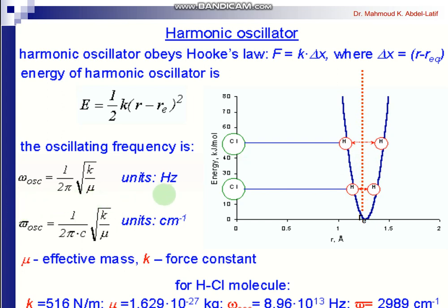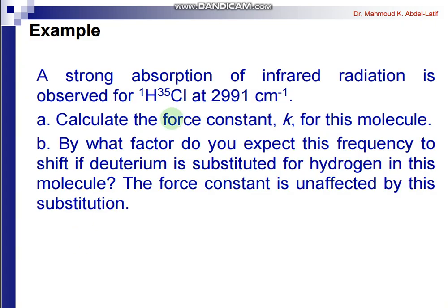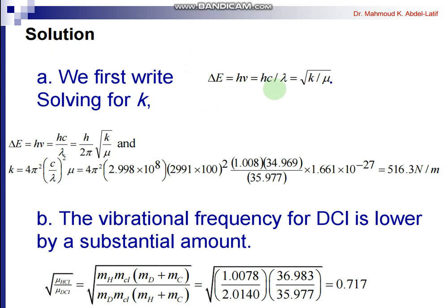The frequency of vibration is given by this equation, and you can get the wave number by dividing by c. As an example, the strong absorption of HCl is at a given frequency value. You can calculate the force constant using this equation directly — the result is a value in Newton per meter.